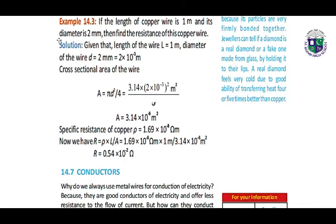Here we have example 14.3. The length of the wire is given, the diameter is given, and the cross-sectional area of the wire is calculated by putting the values in the formula. We get the answer for A, which is 3.14 × 10⁻⁶ m². The specific resistance of copper is given. By multiplying all these values, we get the value of R.